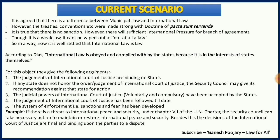One example of this is that if there is a threat to international peace and security, under Chapter 7 of the UN Charter, the Security Council can take necessary action to maintain or restore international peace and security. Besides this, the decisions of the International Court of Justice are final and binding upon the parties to a dispute. With this, we can say that international law is not the vanishing point of jurisprudence.